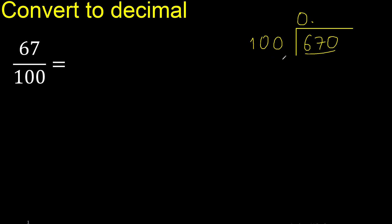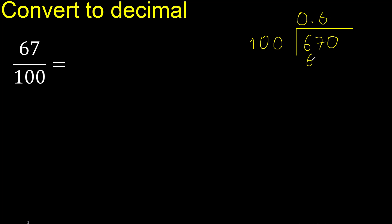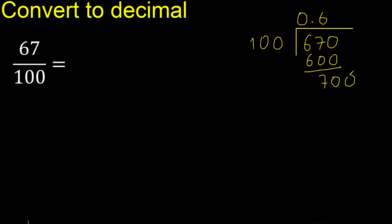0 point is not less. 100 multiplied by which number is nearest to 670 but not greater — multiplied by 7 is greater, therefore multiplied by 6. That is not greater. Subtract. There is no number, therefore complete — always complete with 0.